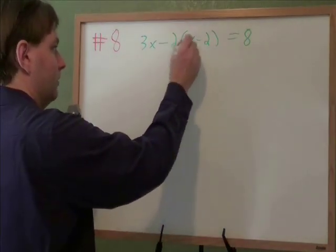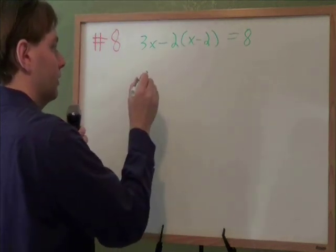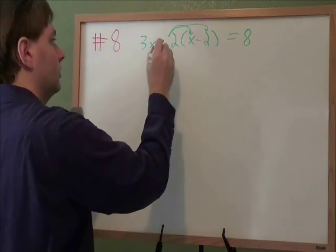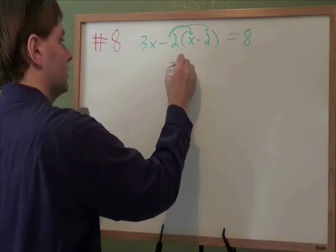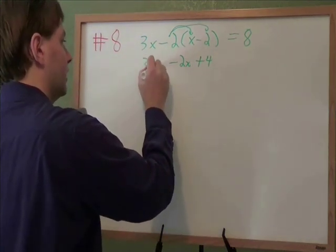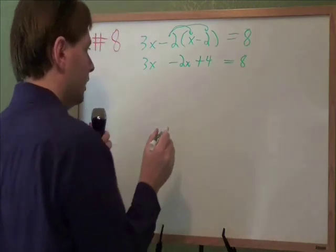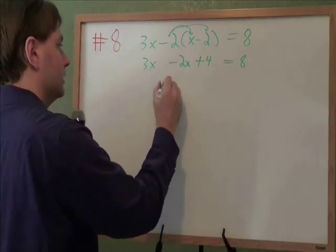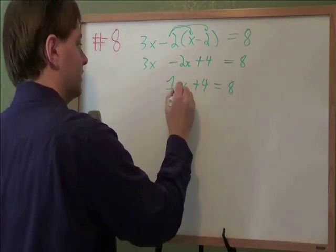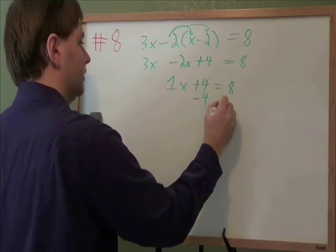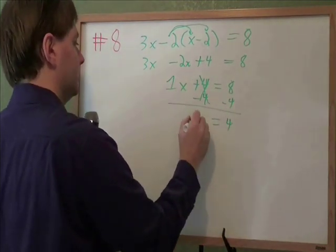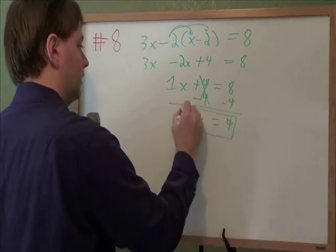To solve this problem, we need to start by simplifying all this stuff on the left. The first thing we can do when we have a number right next to a parenthesis like that, we can distribute the negative 2 out. So we multiply negative 2 times x, which gives us negative 2x. And negative 2 times negative 2, which gives us positive 4. The 3x didn't change, and the equals 8 didn't change. From here, we can combine like terms. 3x minus 2x is 1x, or just plain old x. And then to get this x by itself, we need to get rid of this plus 4. So we subtract 4. 4 minus 4 cancels out. 8 minus 4 is 4. And 1x is just a plain old x. And that is our answer.